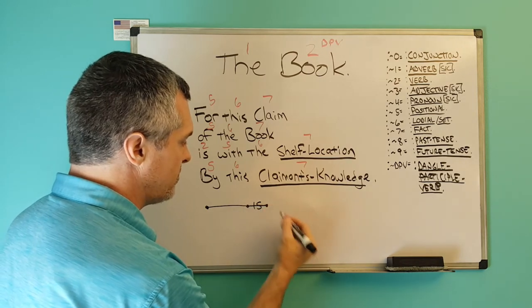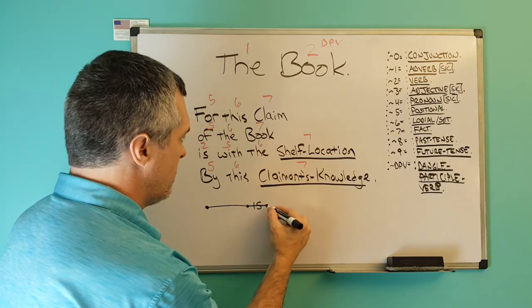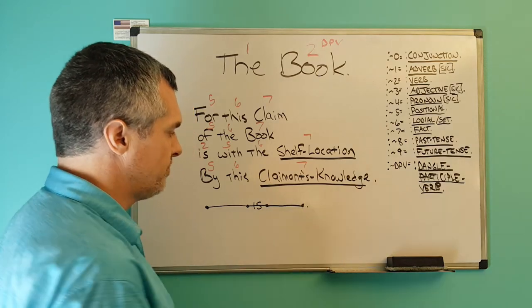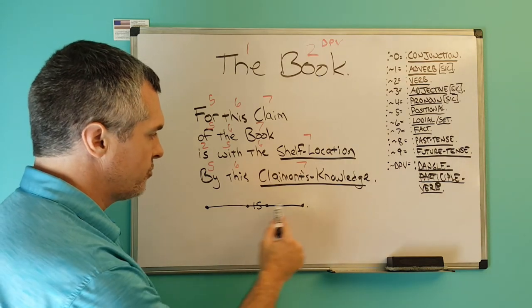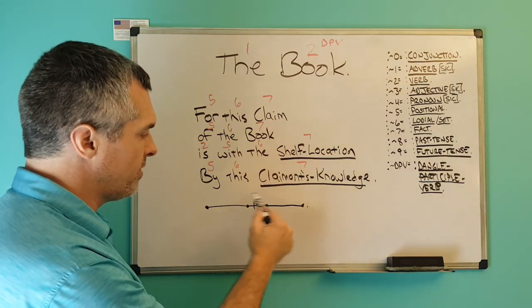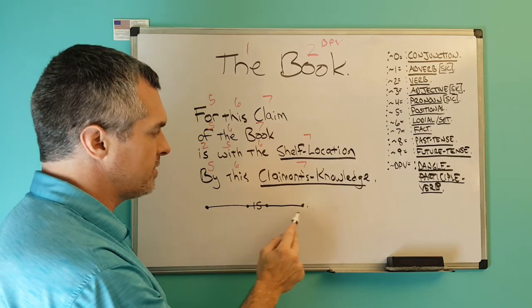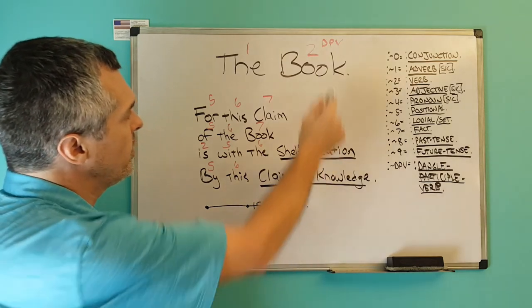With the shelf location, by the claimant's knowledge. Straight line, verb of the thinking right here, moving the cause consequence into the possessive authority. We don't have that here.